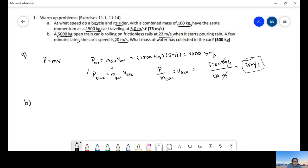We're going to make a drawing. We have a car like this, just rolling, and it's open. The next thing, it starts raining and it collects water. The speed at the beginning is 22 meters per second. The speed at the end is 20 meters per second.